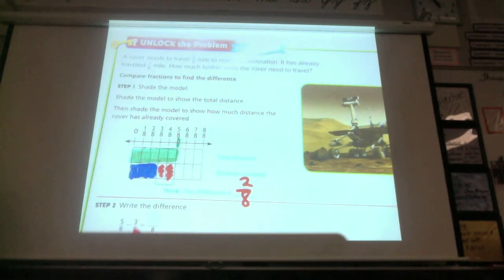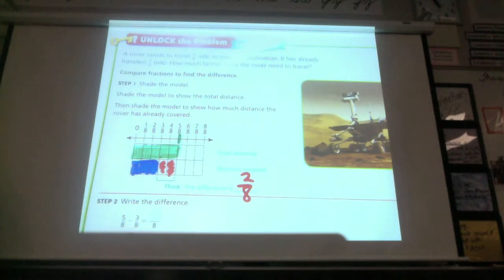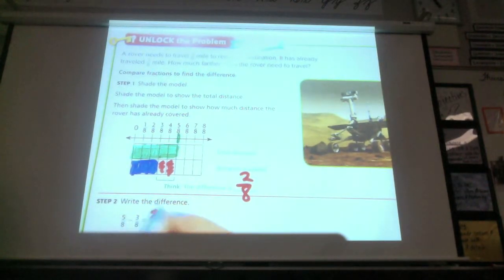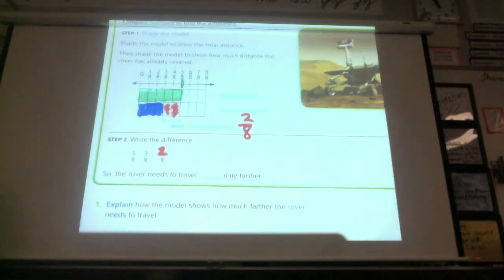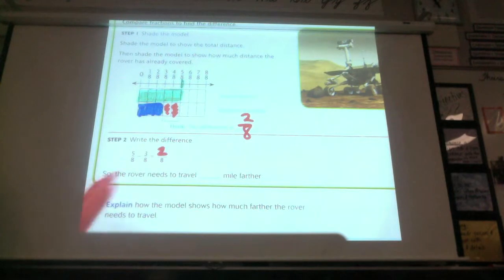The function we use to find that is subtraction. Five-eighths minus three-eighths is two-eighths. And just like when we're adding fractions and we add the numerator, if the denominator is the same, that means the size of the parts is the same, and then we can add the total number of parts, which is the numerator. Remember, we went over that yesterday. Okay, subtraction is the same thing. As long as the denominator is the same, the size of the parts are the same, you can subtract the numerator.